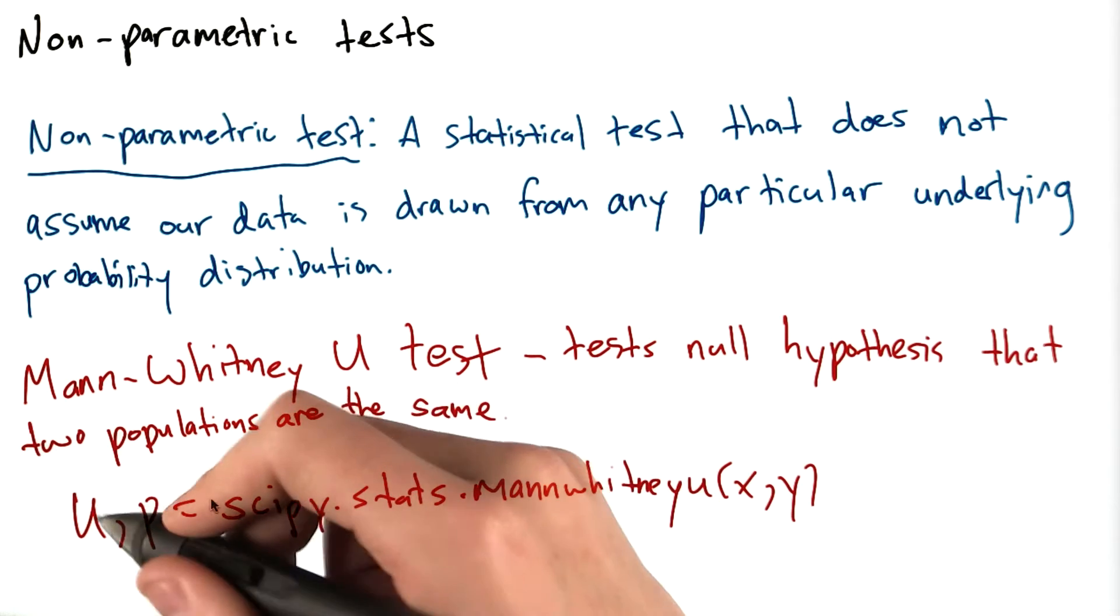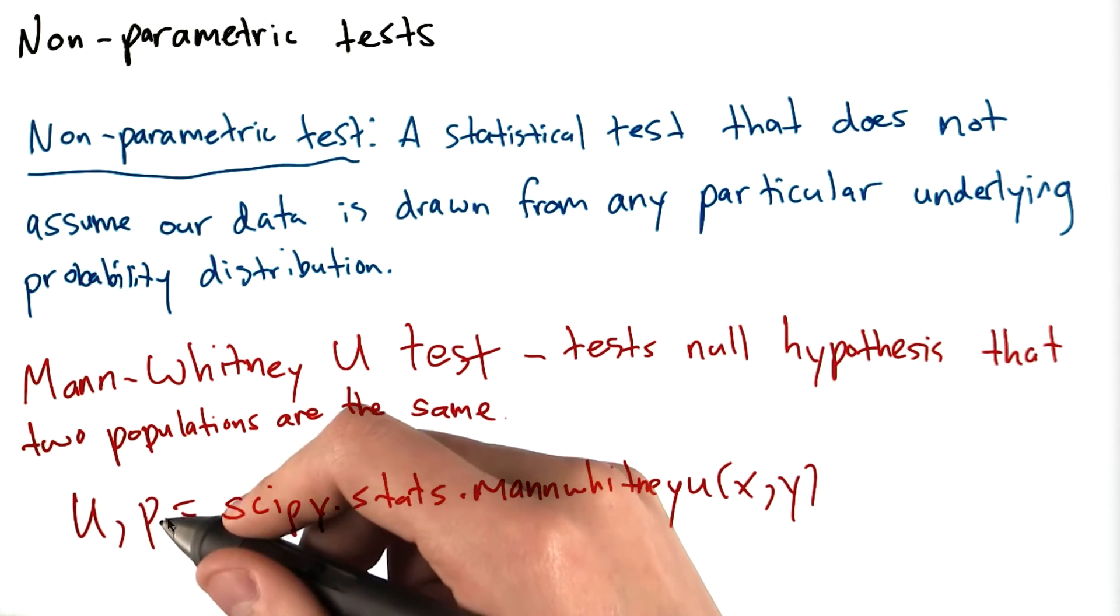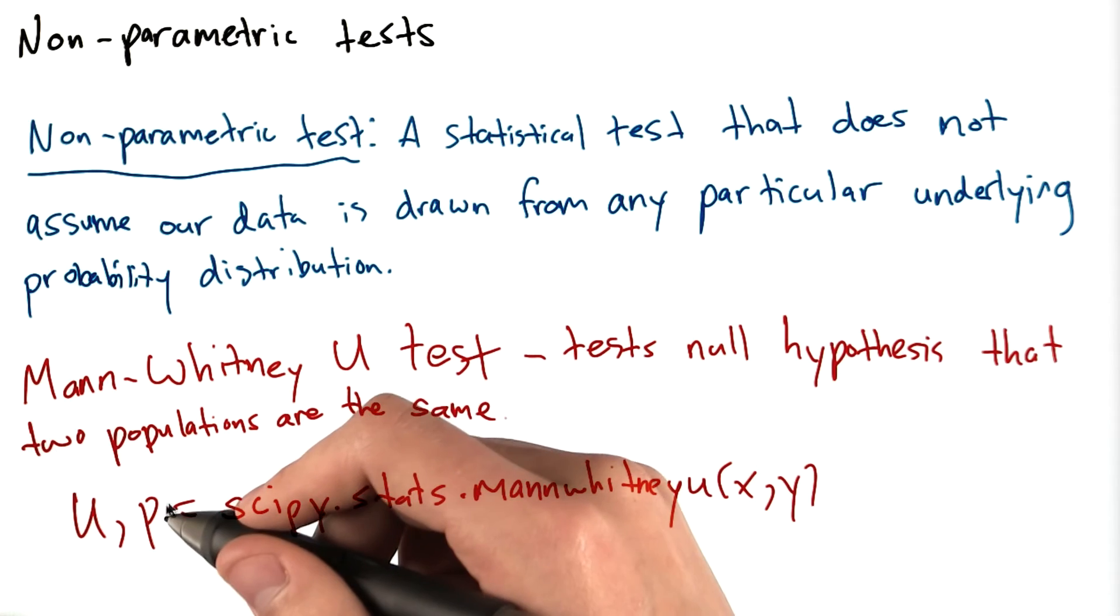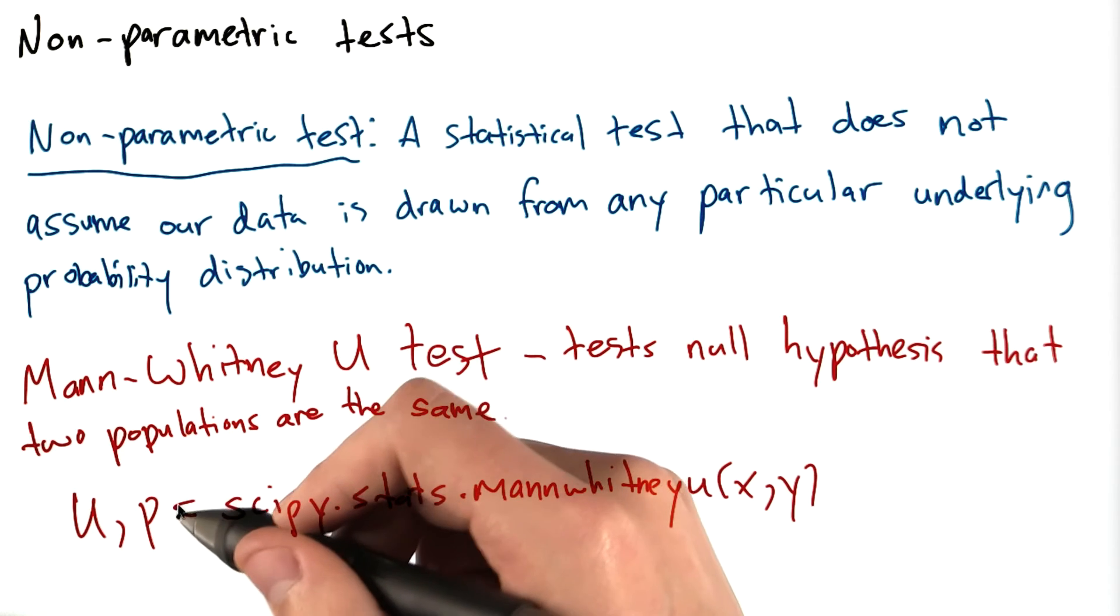This function will return U, the Mann-Whitney test statistic, as well as P, which is the one-sided P value for this test. The P value here again acts as it did for the T test.